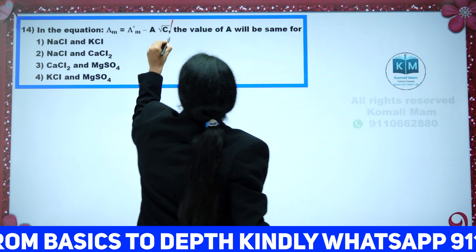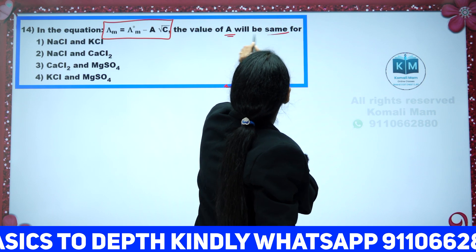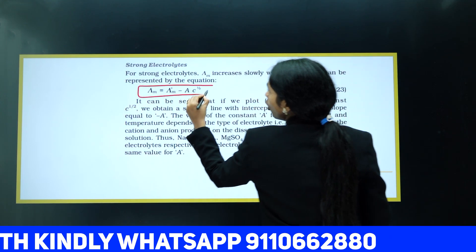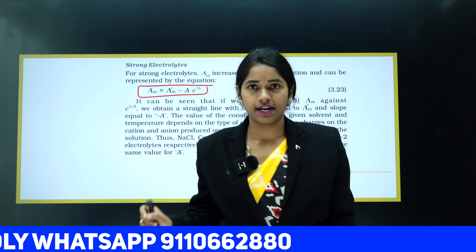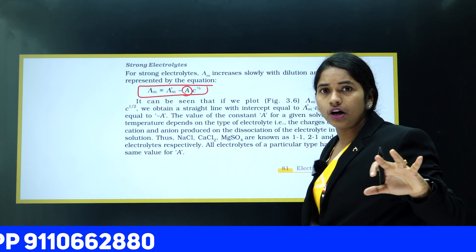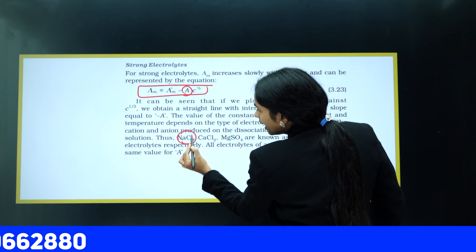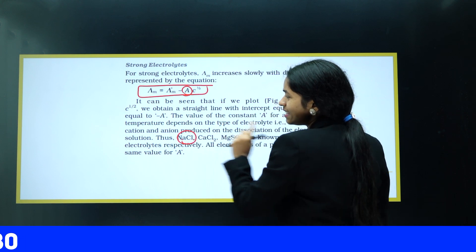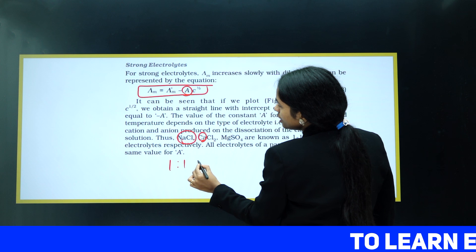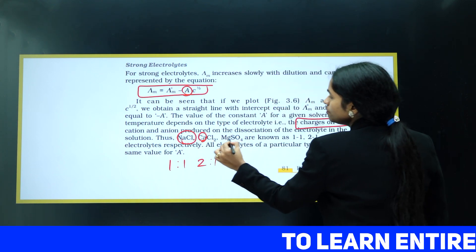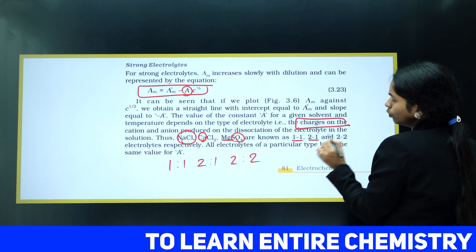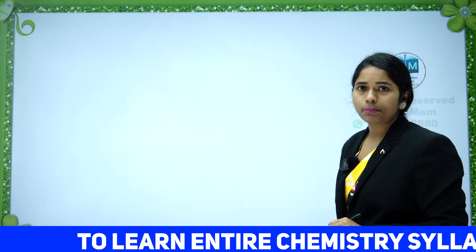In this equation — called Debye-Hückel's equation for strong electrolytes — they are asking for the value of A. A is a constant for a particular type of substance, depending on cation and anion charges. For example, NaCl has Na⁺ (charge 1) and Cl⁻ (charge 1), a 1:1 ratio. CaCl₂ has Ca²⁺ (charge 2) and Cl⁻ (charge 1). MgSO₄ has Mg²⁺ (charge 2) and SO₄²⁻ (charge 2). Substances with the same charge type share the same A value.